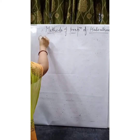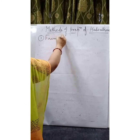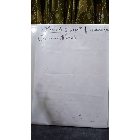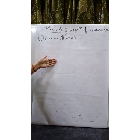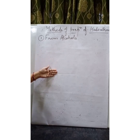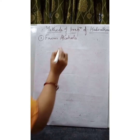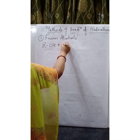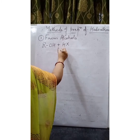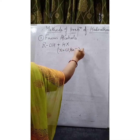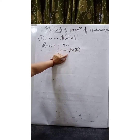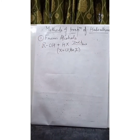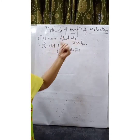The first method of preparation of haloalkanes is from alcohols. Alcohols are easily accessible and we can readily prepare haloalkanes from alcohols. A number of different processes can be used. ROH is the general formula of alcohol. When treated with HX — hydrogen halide, where X is chlorine, bromine, or iodine (fluorine compounds are prepared by different methods) — in presence of ZnCl2 as a catalyst, HX and ZnCl2 together are known as Lucas Reagent.